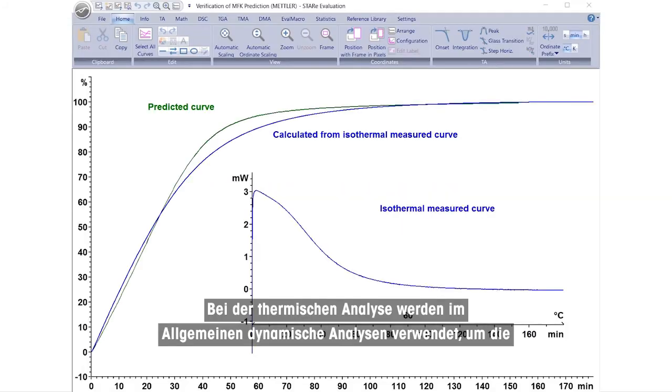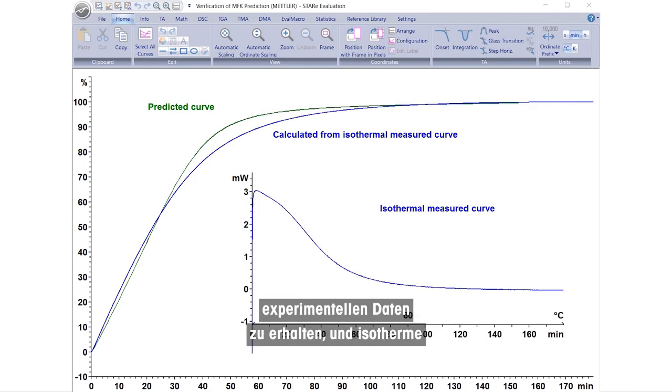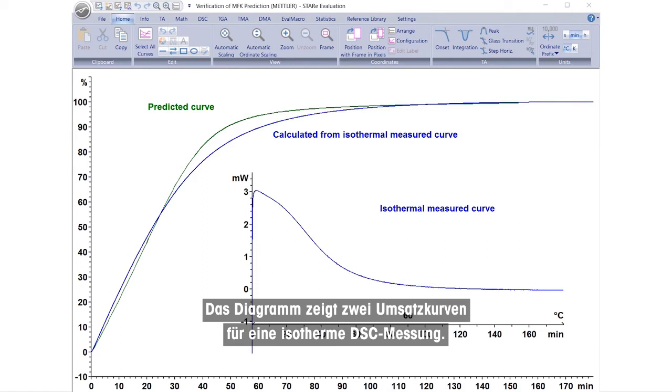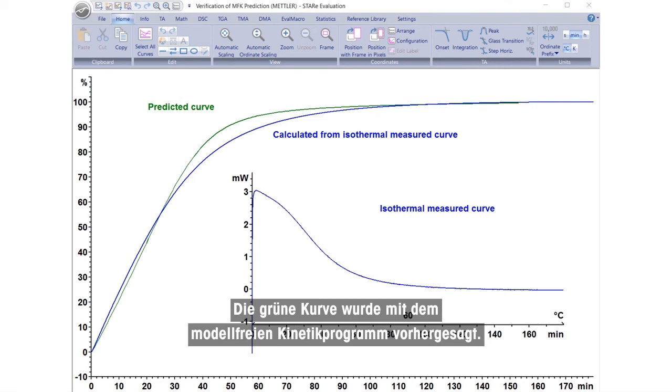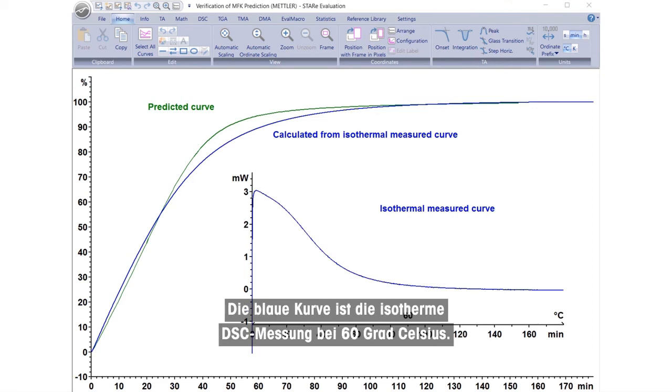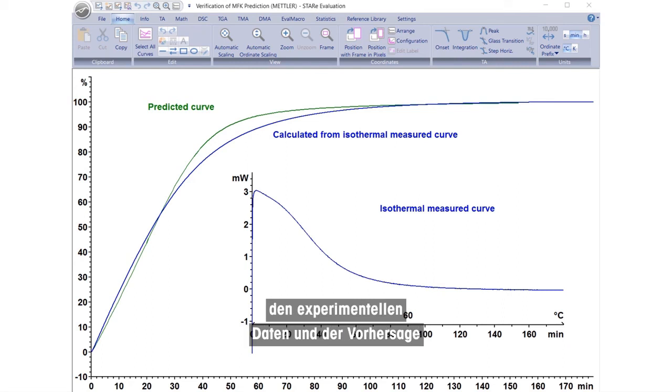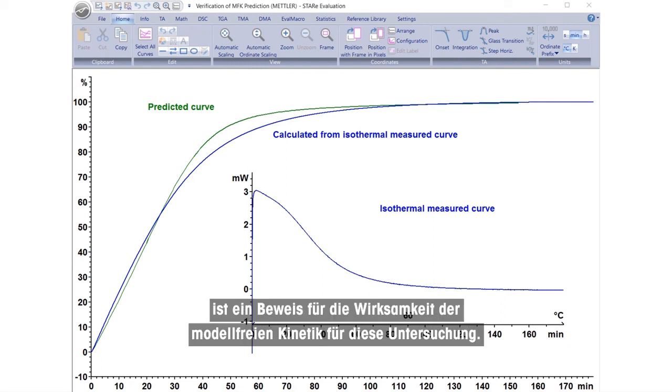In thermal analysis, we generally use dynamic measurements to obtain the experimental data and isothermal measurements to check the predictions. The diagram shows two conversion curves for an isothermal DSC measurement. The green curve is that predicted using the Model Free Kinetics program, and the blue curve is the isothermal DSC measurement at 60 degrees Celsius. The excellent agreement between the experimental data and the prediction is proof of the effectiveness of Model Free Kinetics for this investigation.